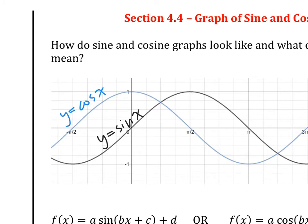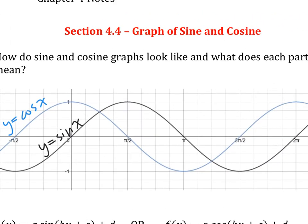Next, let's see how much we recall from last year — that was the last part of our year. What is period? What does period mean of the graph? The period is two pi, but what does period mean? It's how long the cycle is. How long does it take for this graph to repeat itself?